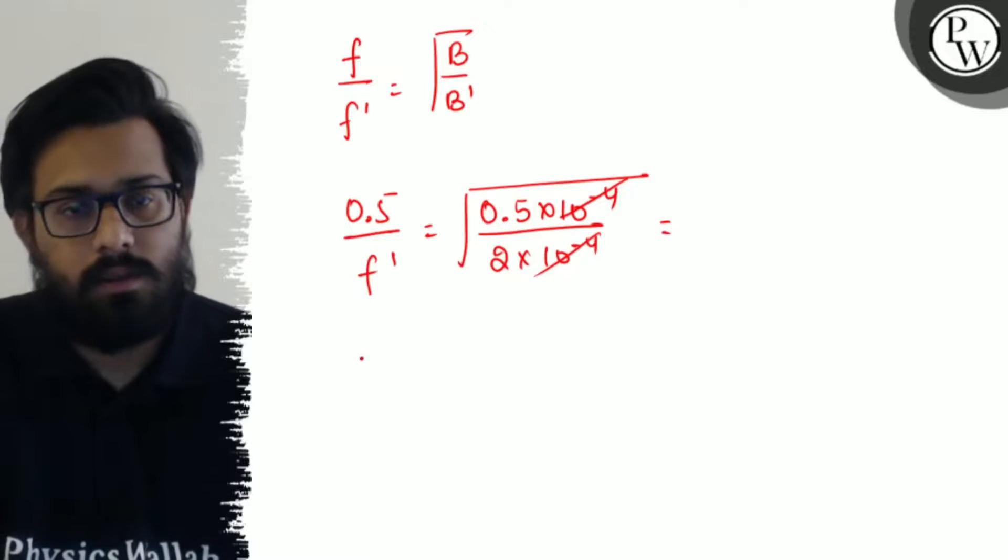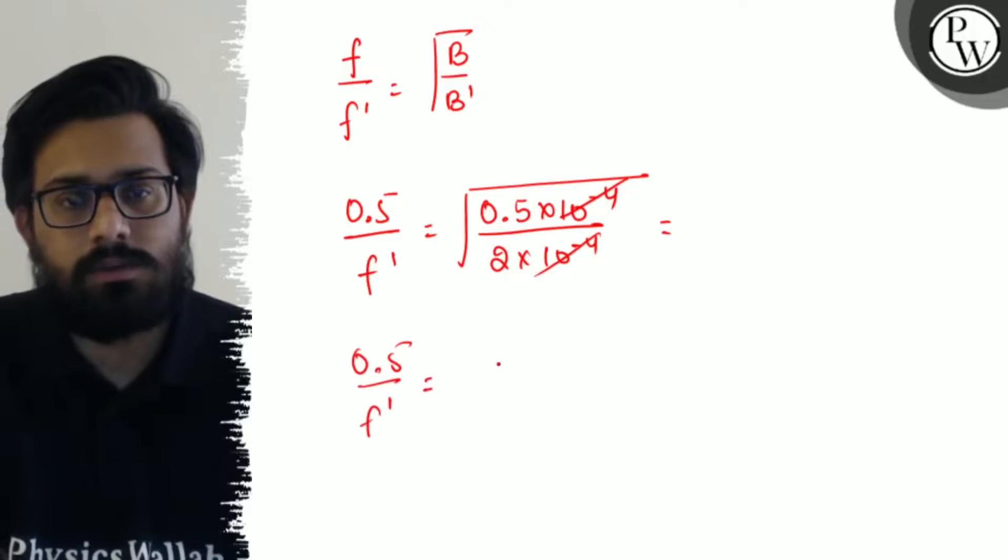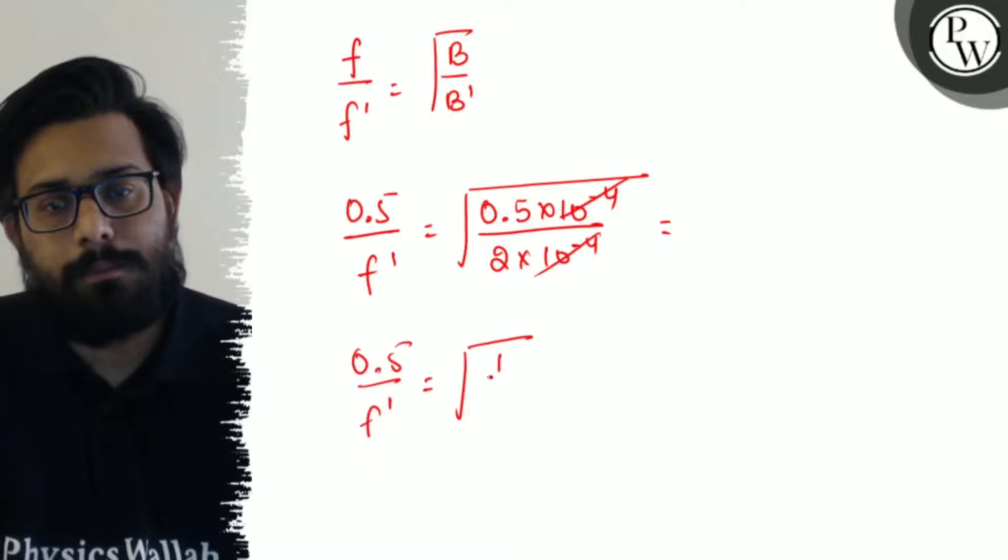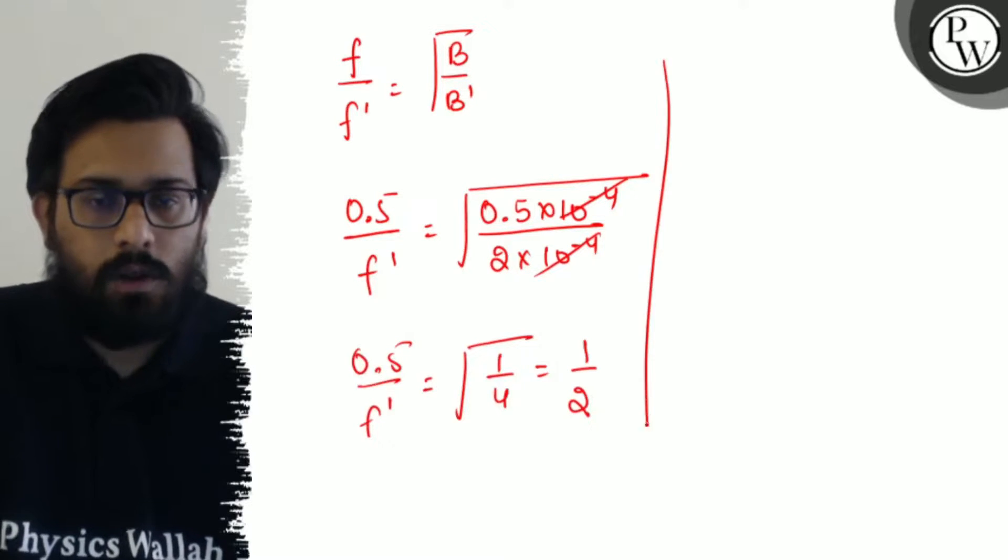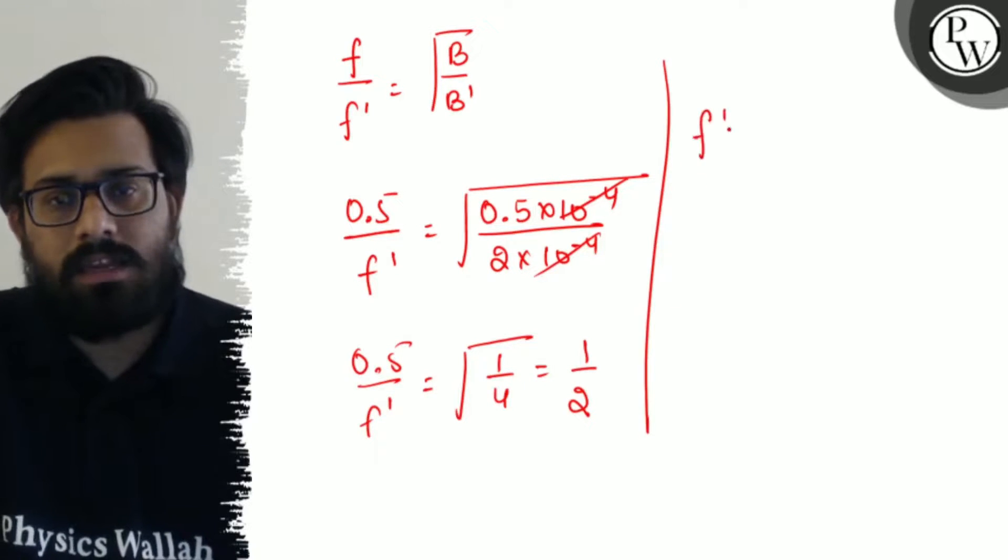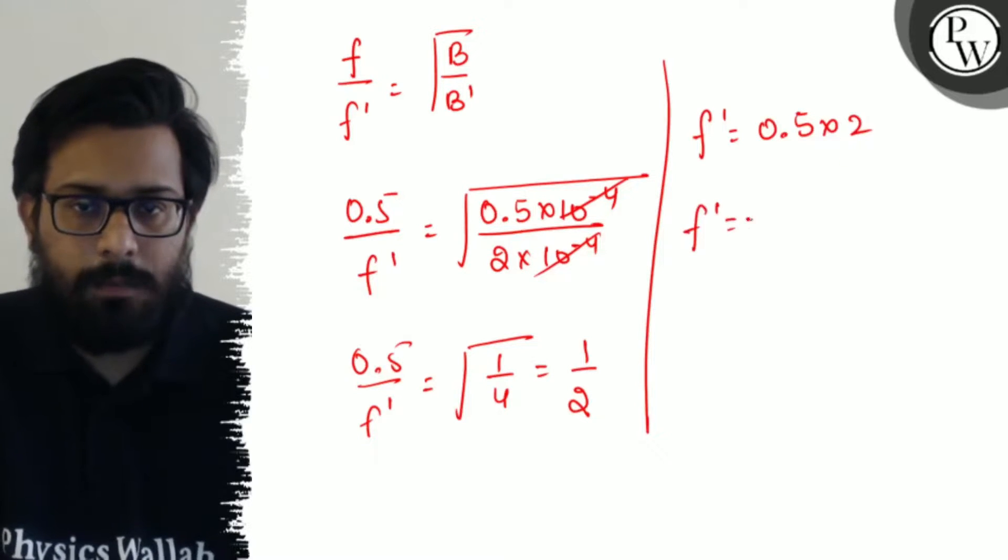This can be written as 0.5/f' = 1/4, or you can say 1/2. Solving it further, the value of f' = 0.5 × 2. So f' comes out to be 1.